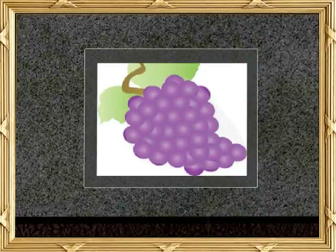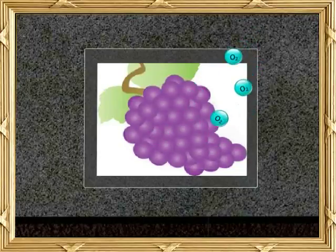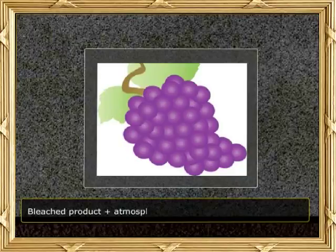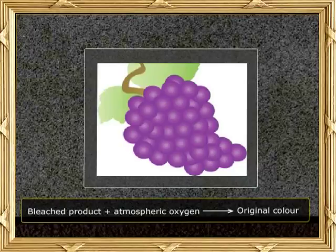The bleached product reacts with oxygen to regain its colour. That is, bleached product plus atmospheric oxygen will give you its original colour. Thus, the bleaching action of sulphur dioxide is temporary.